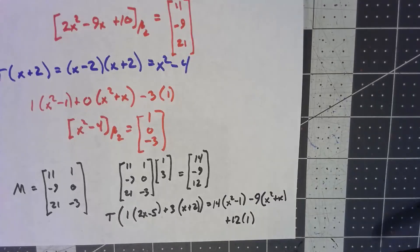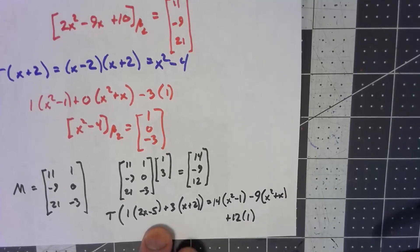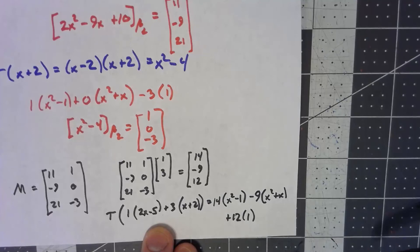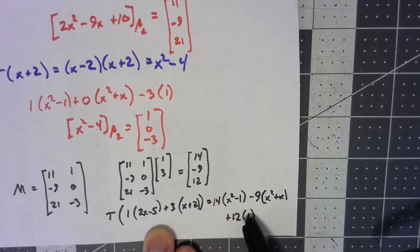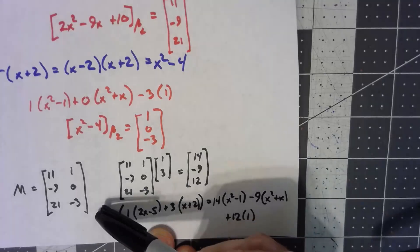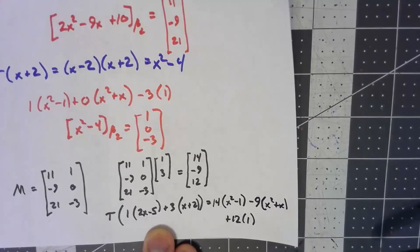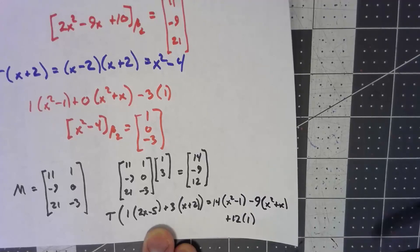You should be able to multiply that out and make sure that actually works. Remember we're doing a linear transformation of this, so this doesn't equal this—x minus 2 times this should equal this. I'll leave that for you to check.